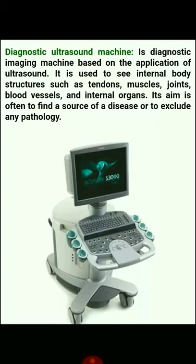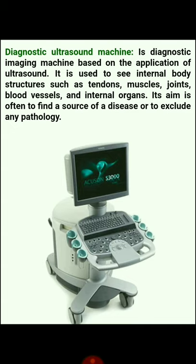Next instrument is the diagnostic ultrasound machine. It is a diagnostic imaging machine based on the application of ultrasound. It is used to see internal body structures like tendons, muscles, joints, blood vessels, and internal organs. Its aim is often to find a source of disease or to exclude any pathology.